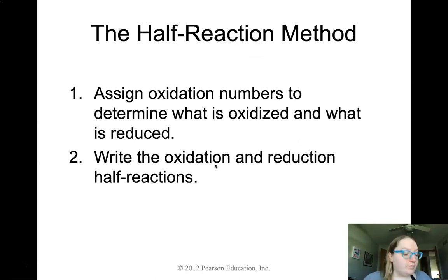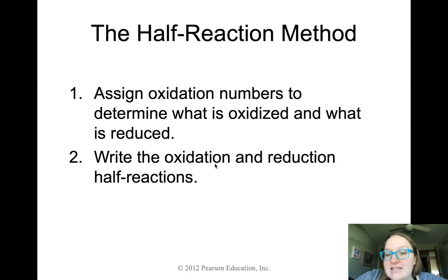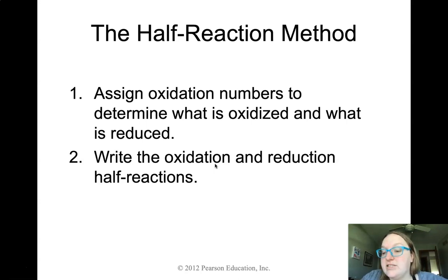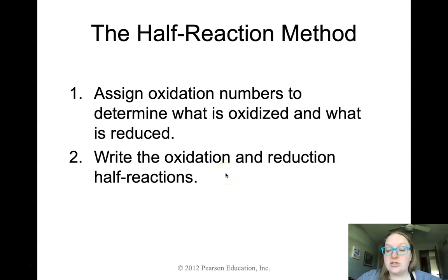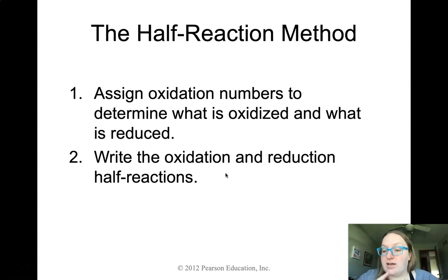Step one is to assign oxidation numbers to determine what gets oxidized and what gets reduced. Step two: write the two half-reactions separately. You're going to put the species that gets oxidized with its partner on one side, and the species that gets reduced with its partner — and we'll go through an example shortly.